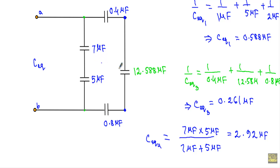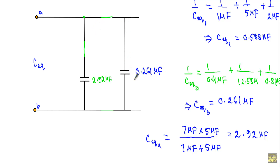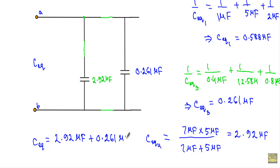Replacing both branches, the 2.92 µF and 0.261 µF are now in parallel. Therefore the final equivalent capacitance between terminals A and B is 2.92 µF + 0.261 µF = 3.18 µF. We can replace the entire circuit with a single capacitance of 3.18 µF.